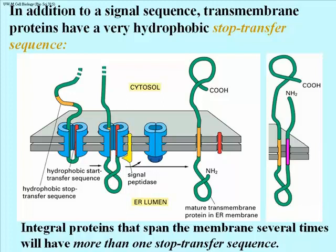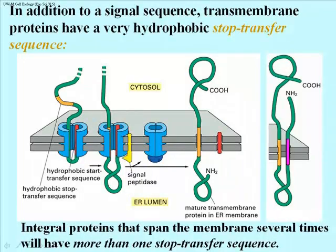Transmembrane proteins that cross the membrane more than once — two, three, four, or even seven times — had multiple stop-transfer sequences. As the polypeptide grew, the hydrophilic components ended up facing either inside or outside the cell, while the hydrophobic stop-transfer sequences were buried in the phospholipid bilayer. The protein loops in and out of the membrane as it is translated by a ribosome, each time leaving behind a stop-transfer sequence in the membrane.